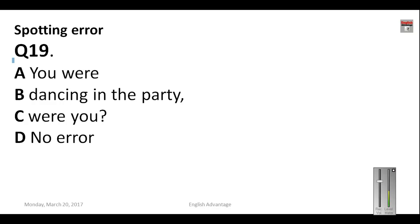Question number nineteen: 'You were dancing in the party, were you?' This is a question tag. If the statement is affirmative, the question tag is negative. 'You were dancing in the party' is affirmative, so the correct question tag will be 'weren't you.' C will be your answer.